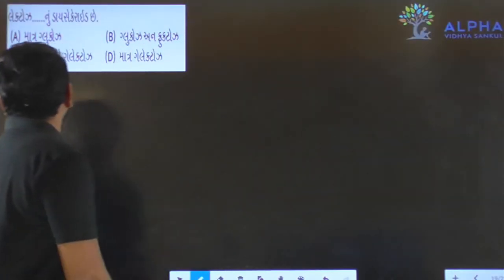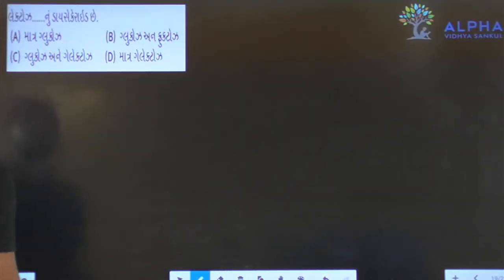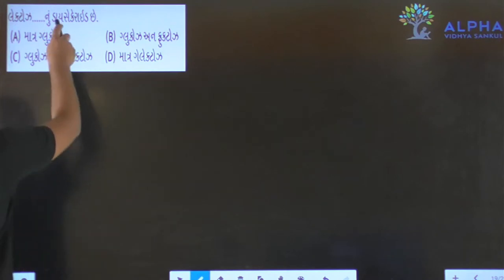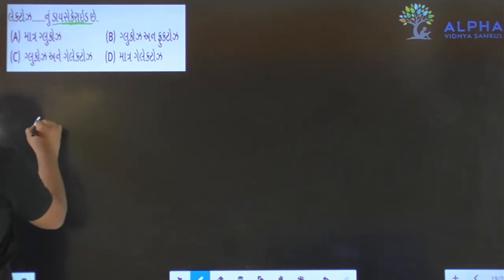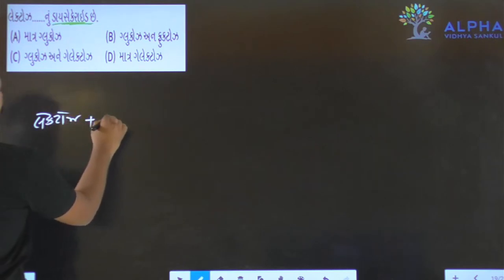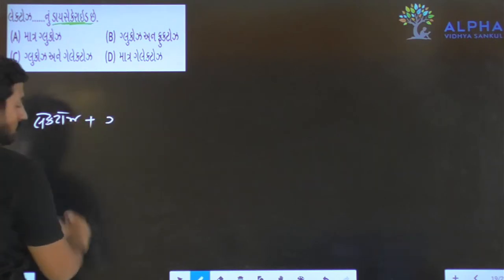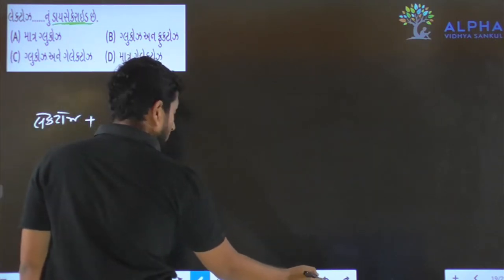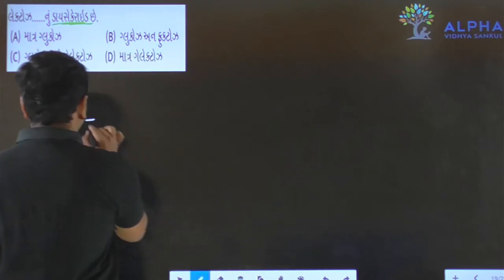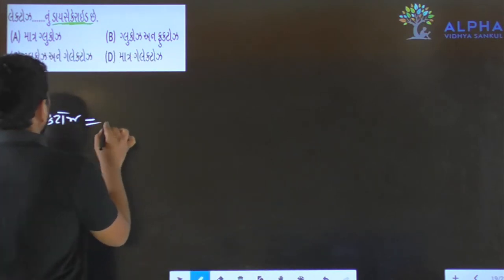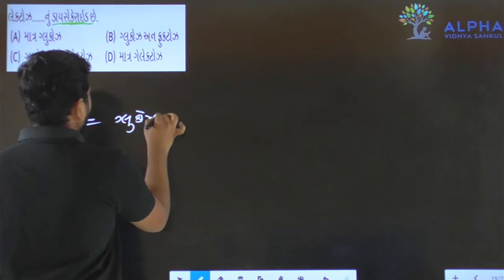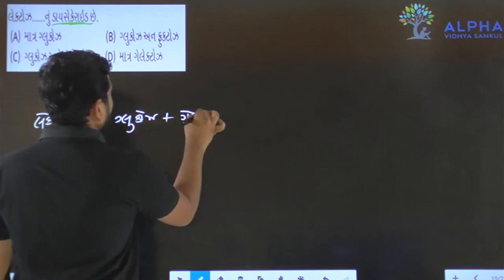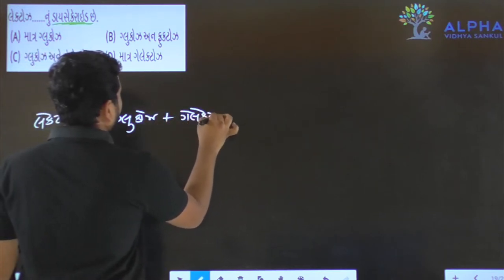Next question. Lactose is a disaccharide. Disaccharide means 2. So, who is lactose? Lactose is equal to glucose and galactose.